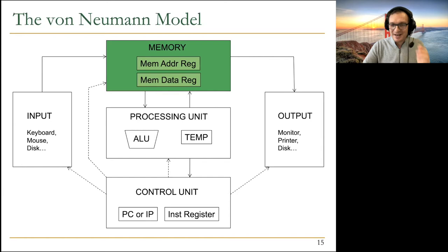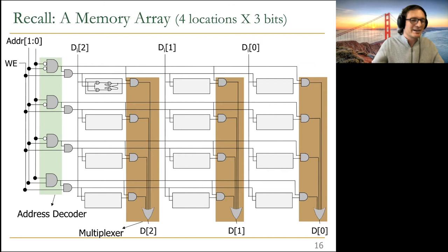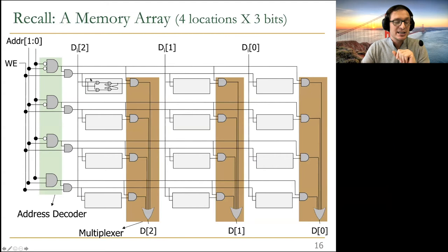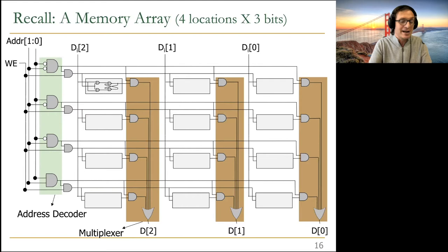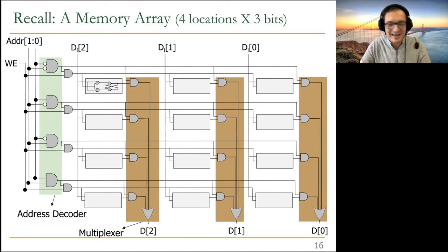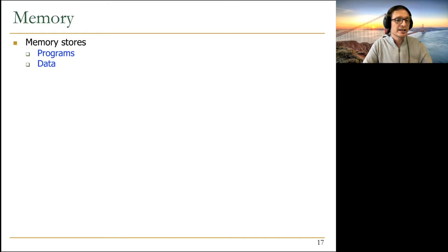Let's start with memory, since we've already built memories. This is our memory array — you have four addresses (address space of four) and each location has three bits (addressability of three). Modern memories are byte addressable — whenever you access a location you get one byte. You normally have much larger address spaces in modern memories, like 2 to the 40 locations for example.